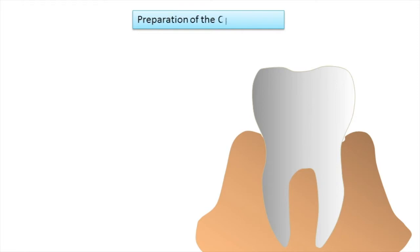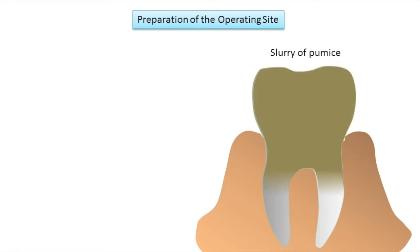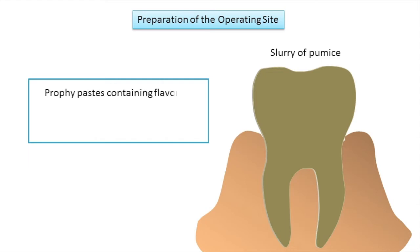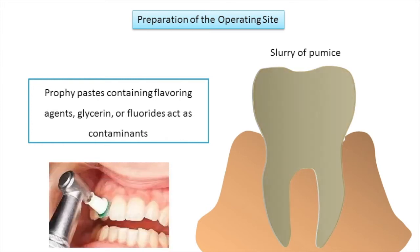The next step is preparation of the operating site. Prior to beginning any composite restoration, it may be necessary to clean the operating site with a slurry of pumice to remove plaque biofilm and superficial stains, creating a clean operative site more receptive to bonding. Note that prophylactic paste containing flavoring agents, glycerine, or fluorides should be avoided as they may interfere with acid etching and compromise the adhesive procedure.